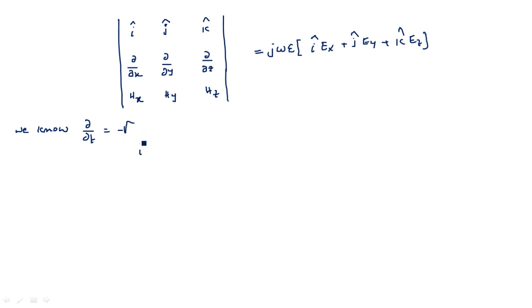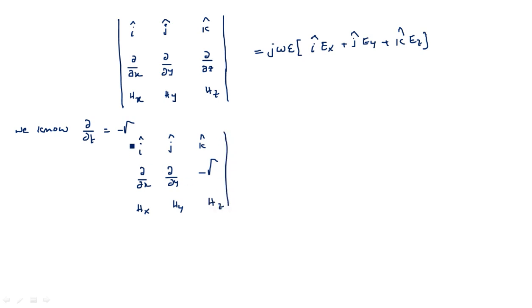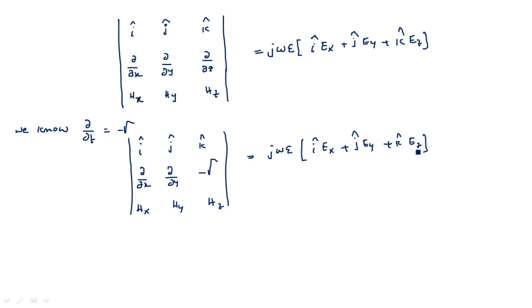Substituting, the determinant becomes: i-cap, j-cap, k-cap in the first row; ∂/∂x, ∂/∂y, −γ in the second row; and Hx, Hy, Hz in the third row. The right-hand side is jωε times (i-cap Ex + j-cap Ey + k-cap Ez). Now we apply matrix determinant expansion normally.